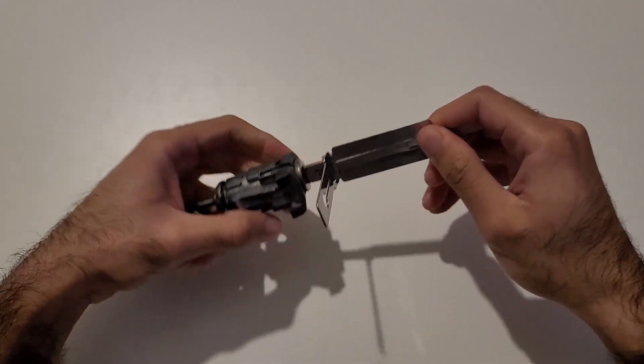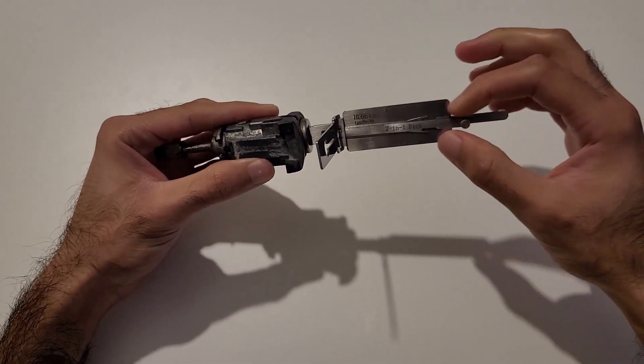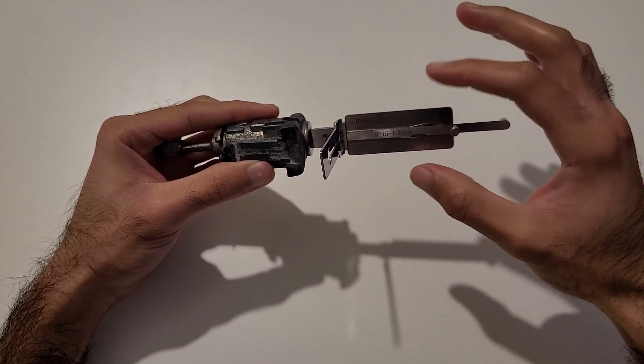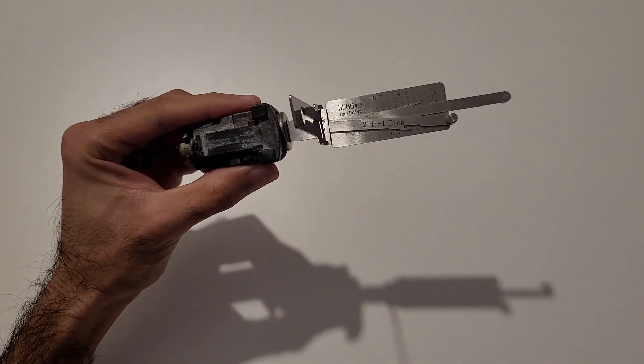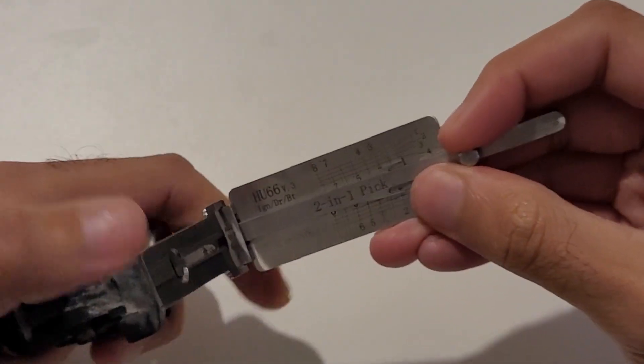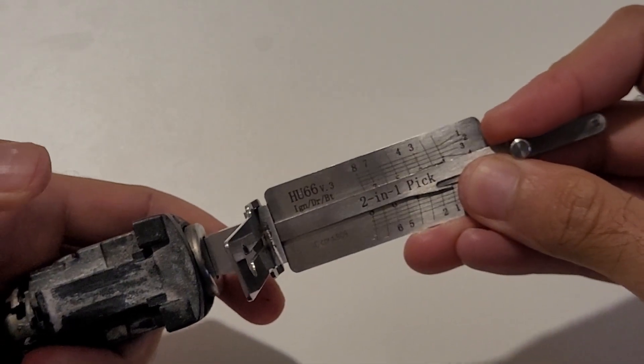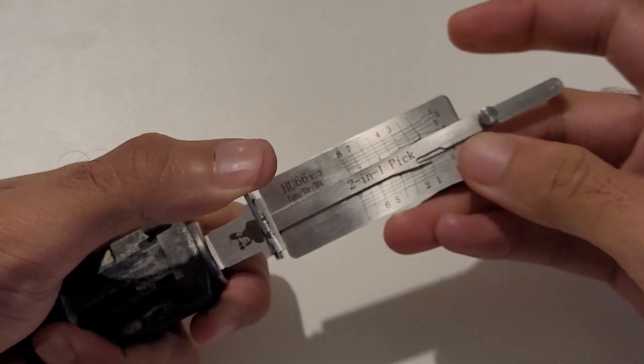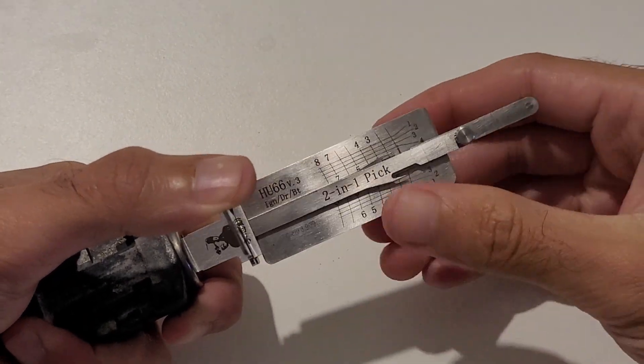It's important to maintain tension throughout the lock picking process, otherwise the wafers which you have already picked will flick back into their locked position. Pick in my right hand, lock in the left hand, tensioning with my left thumb. I think that's as good as we'll get for seeing the tool.